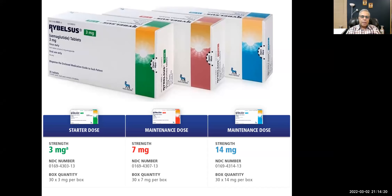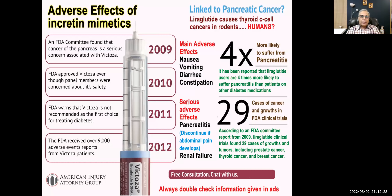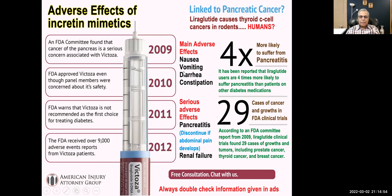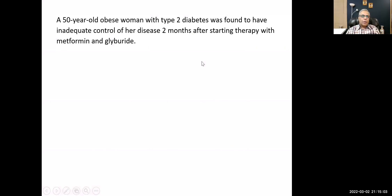Main adverse effects of semaglutide are nausea, vomiting, diarrhea, and constipation. Serious adverse effects include pancreatitis and renal failure — if existing renal failure is present, the drug must be discontinued. There are weak studies showing association with certain cancers in animal studies, though the picture in humans is unclear.